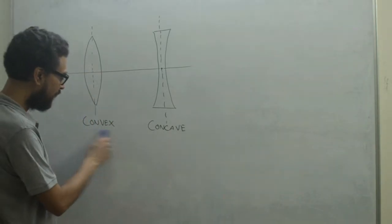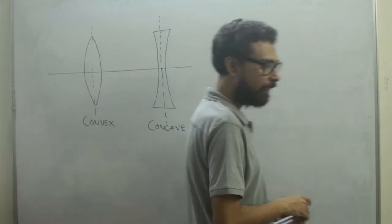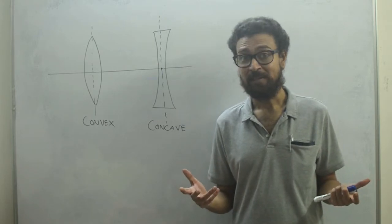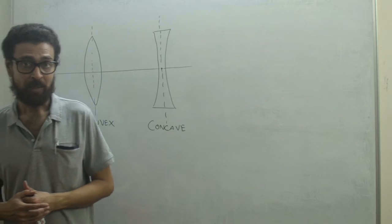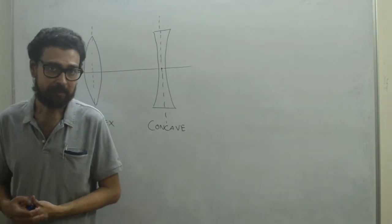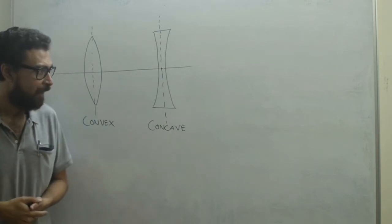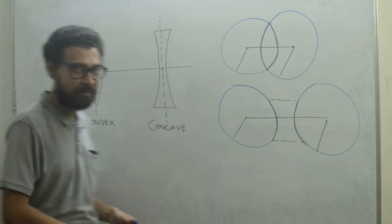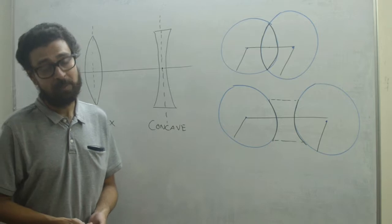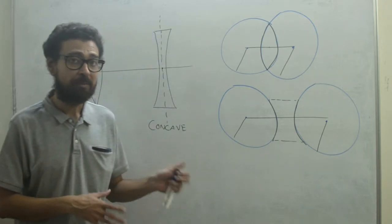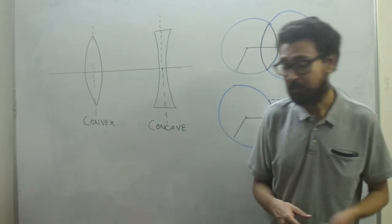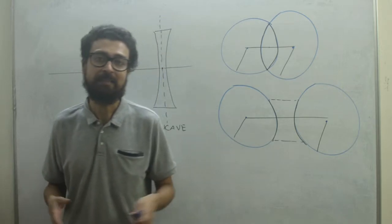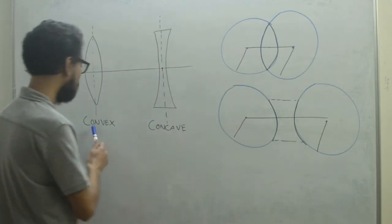Here we have a convex lens and a concave lens — you can see how they look. First of all, what is a lens? We have to understand that. You have already seen lenses; even I'm wearing a lens. So let us first know how we can define a lens. Mostly we have spherical lenses in our surroundings. Lenses are formed by intersecting spherical surfaces — you can see the convex lens is formed by intersecting two spherical boundaries.